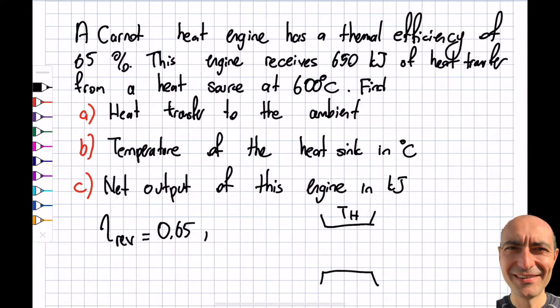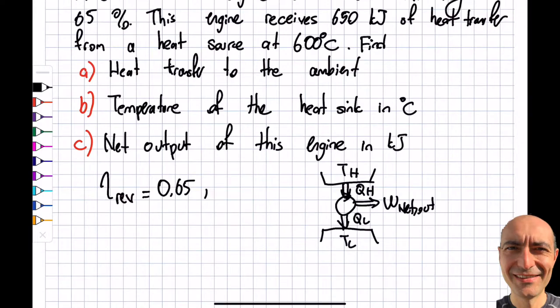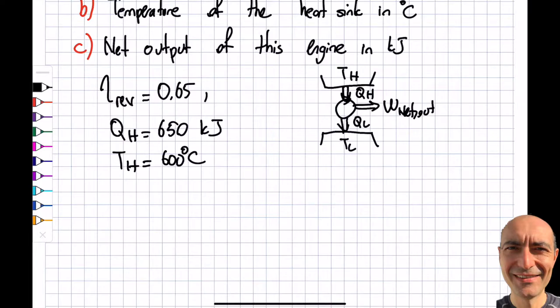Let me draw this so we are on the same page. This is TH, this is TL, this is my heat engine, this is net output from it. This is my QH that I receive from the high temperature reservoir, and this is heat that I waste into the low temperature sink. The engine receives 650 kilojoules, so QH equals 650 kJ, and my TH is 600 Celsius.